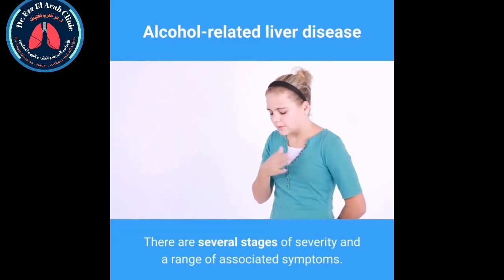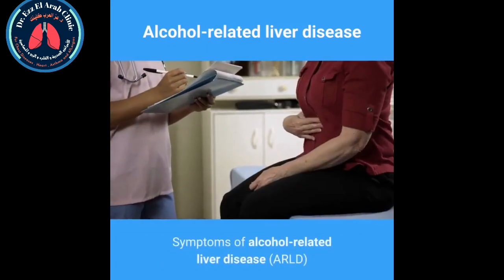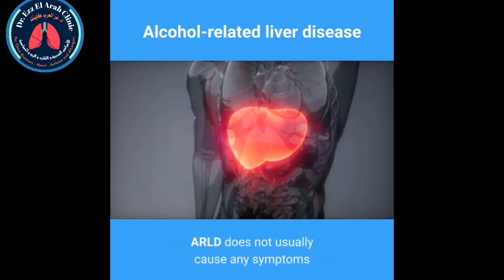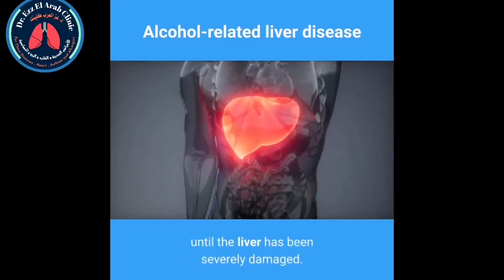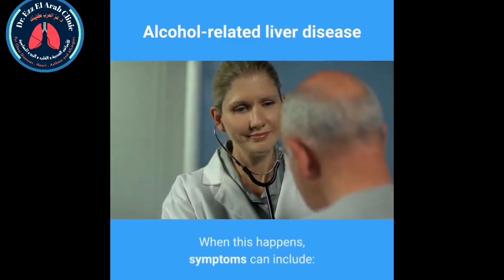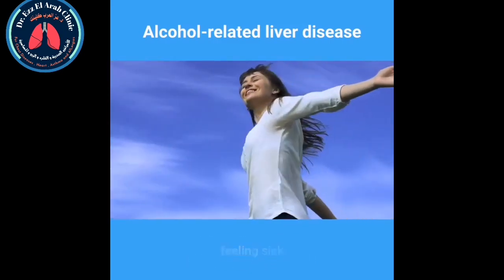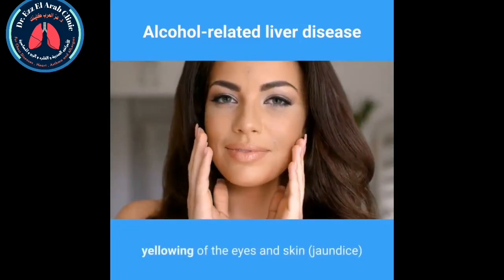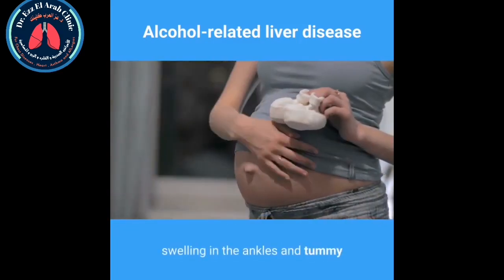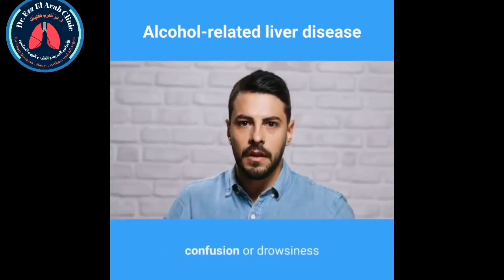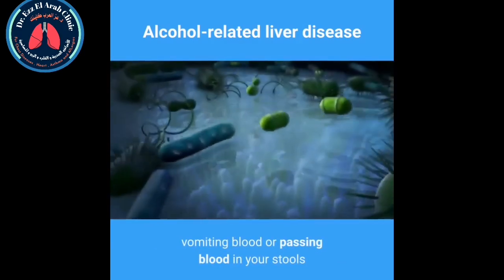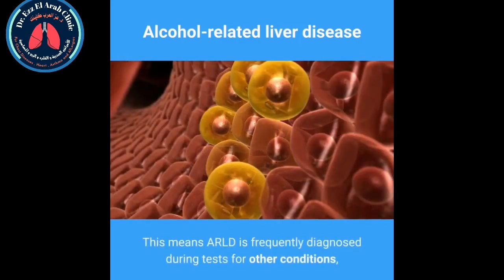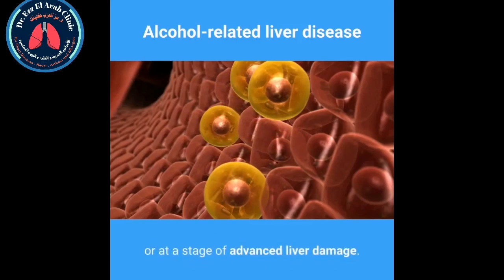ARLD does not usually cause any symptoms until the liver has been severely damaged. When this happens, symptoms can include feeling sick, weight loss, loss of appetite, yellowing of the eyes and skin (jaundice), swelling in the ankles and tummy, confusion or drowsiness, vomiting blood, or passing blood in your stools. This means ARLD is frequently diagnosed during tests for other conditions or at a stage of advanced liver damage.